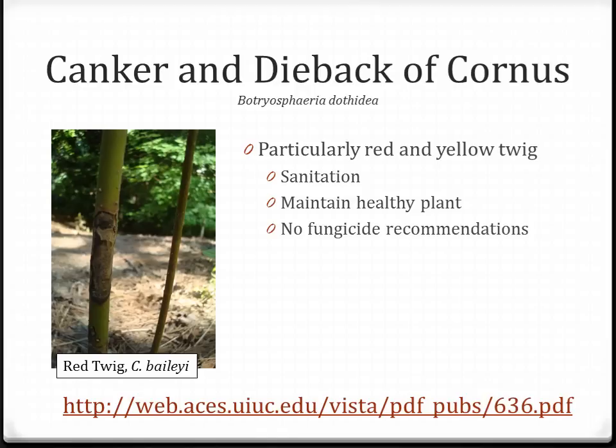There are certain plants that are just challenging to grow, and an example is canker and dieback of cornus — particularly the red and yellow twig varieties. This picture of red twig cornus shows a canker on one of the stems that will eventually die off. This is a plant that needs constant maintenance. There aren't good fungicide recommendations for this, so to keep the plant healthy you need to be constantly looking at it and pruning out any cankers. If you're growing red twig or yellow twig cornus, be looking at it more closely than you do some of your other plants.